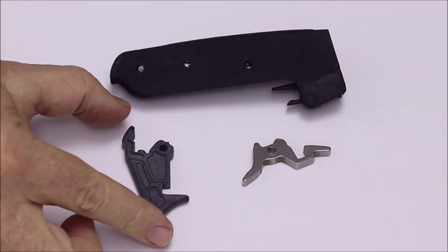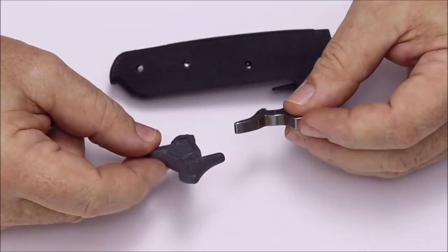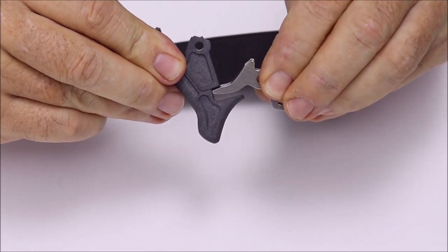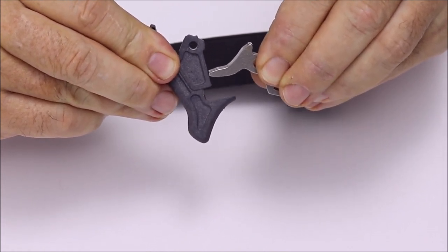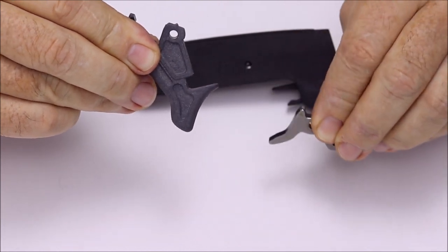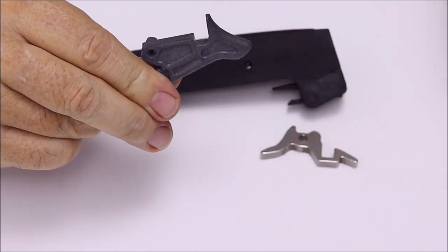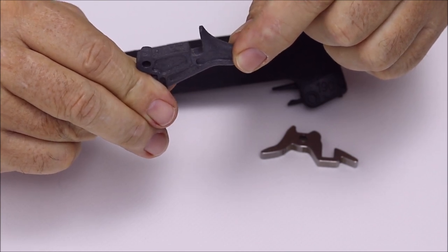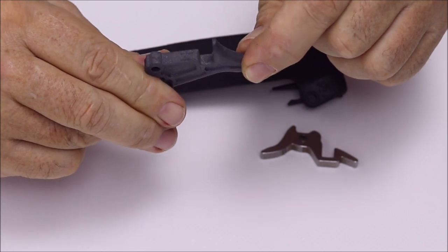As you can see on the trigger, the only wear is very minimal, basically where the stainless sear engages with the trigger. After 16,000 times, you can only just see the edge has been slightly worn down, ever so slightly, a little bit rounded. And I think that might have happened right near the beginning, and since then, nothing else changed.